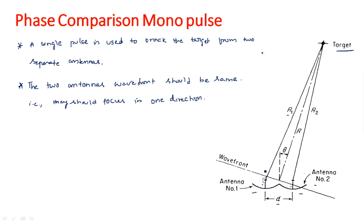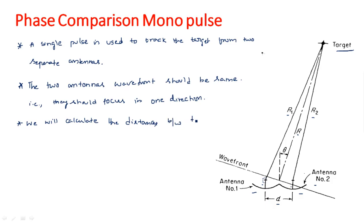Assume the target is located at a distance r1 from the first antenna and at a distance r2 from the second antenna. R is the distance from the center of these two antennas, and theta is the angle made by the target from the normal of the two antennas. We will calculate the distances between the target and radar antennas one and two.